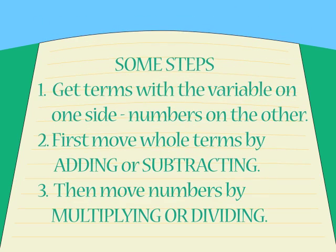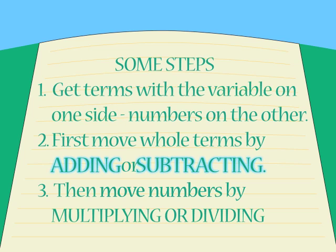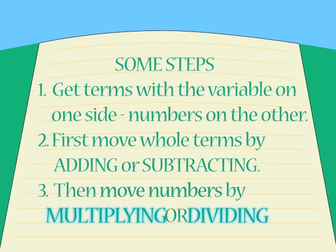We use these rules to achieve one really important thing. Get the variable on one side all by itself. How? First, add or subtract to move whole terms. And then multiply or divide to remove any numbers that are still on the same side as the variable.